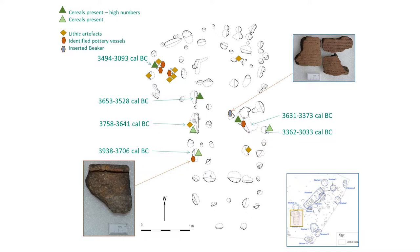Structure 13 looks fairly simple but it isn't. I've put on the radiocarbon dates — you can see some very early ones around about 4000 BC. The first inhabitants — Neolithic farmers — were coming into this country, and we have early dates here and in the other buildings I'm going to show you.